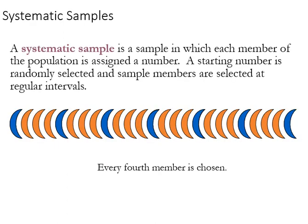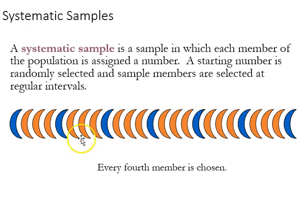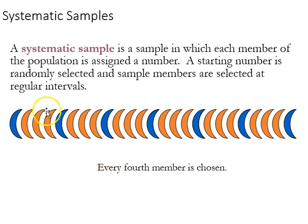Finally, systematic sampling involves just skipping every nth number of cases in a population. If we have names in a phone book, and let's say there are 10,000 names but we only want a sample of 1,000, well we would skip every 10th person and we would get to 1,000 by doing that.